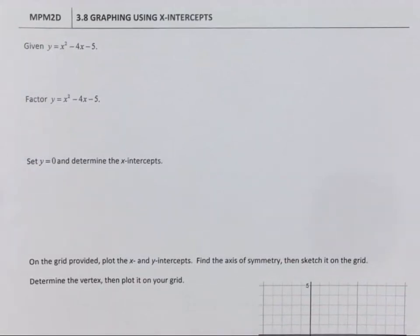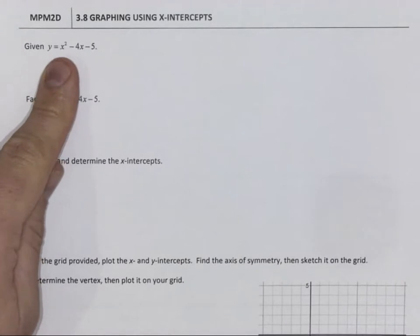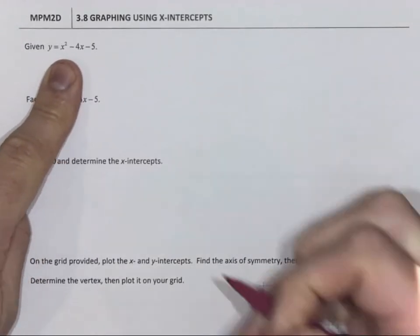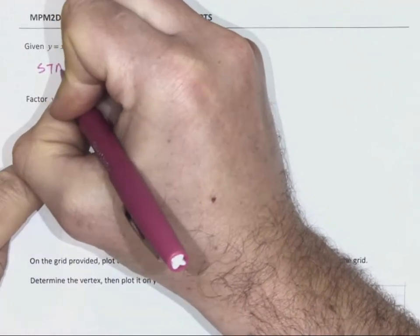If we are given a quadratic, y equals x squared minus 4x minus 5, remember that is standard form.